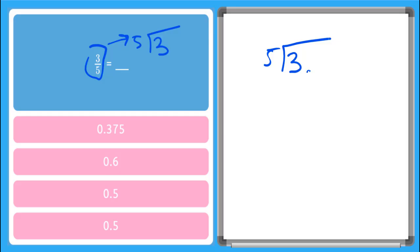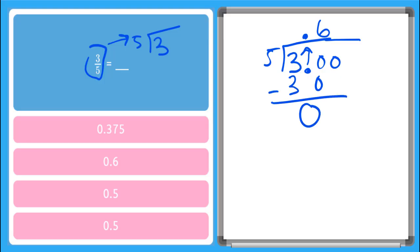So I add my decimal point after my 3 here and I can add some trailing zeros afterwards. And I need to bring my decimal point right up above to the same point. And now I can divide — 5 goes into 30 how many times? From your 5 fact families, you might know that that is 6, and 5 times 6 is 30. So when I subtract here, I get a 0, so now I'm done with this division problem. This tells me that 3 fifths equals a division problem which is equal to 0.6.